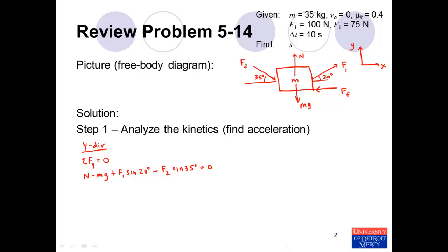We find the normal force because we need it to compute the friction force, modeled as the coefficient of friction times the normal force. Solving: N equals mg minus F1·sin(20°) plus F2·sin(35°), which is 35 × 9.81 minus 100 × sin(20°) plus 75 × sin(35°), giving a normal force of approximately 352 newtons.